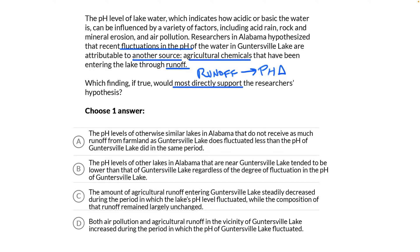The pH levels of otherwise similar lakes in Alabama that do not receive as much runoff from farmland as Guntersville Lake does fluctuated less than the pH of Guntersville Lake did in the same period. Hey, how about that? This matches my test — we're talking about fluctuation, the degree of change. Less farm runoff in similar lakes led to less fluctuation in pH. We need to compare apples to apples here, comparing Guntersville Lake to other similar lakes to properly understand the impact of agricultural runoff. This has to be the answer.